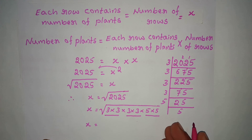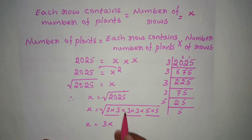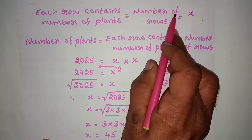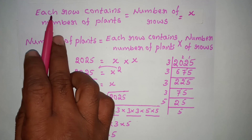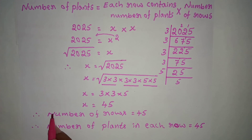Using prime factorization, we get 3 into 3, another group 5 into 5. Multiplying: 3 into 3 is 9, and 9 into 5 is 45. So x equals 45. Therefore the number of rows is 45, and each row contains 45 plants.